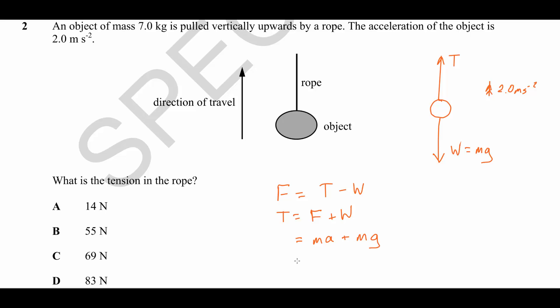You can factorize this, if you like, to get M brackets A plus G, where the mass is 7 kg, and the acceleration is 2, and gravity is 9.81, which gives us a final answer for the tension of 82.7 Newtons.